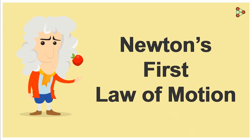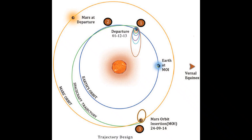I have given more information about Newton's first law in my other video, so make sure to watch that as well. Once Mangalyan reaches the Martian sphere of influence, it does something called the Mars orbit insertion. In this, the spacecraft trajectory is corrected and made to enter the Martian orbit.